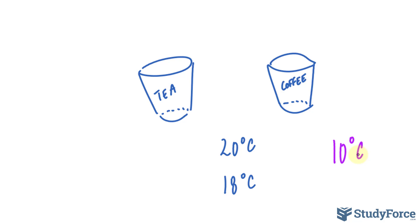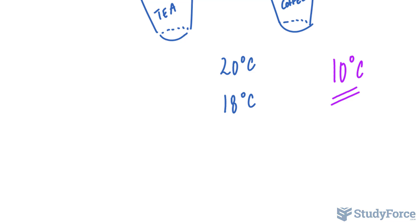Now from experience, these two beverages will obviously end up becoming the same temperature, especially if they're being placed in the same environment. So how do we calculate the amount of time for the difference to become only 10 degrees Celsius? For that, we have to use a special formula.